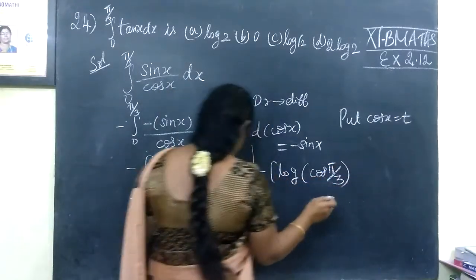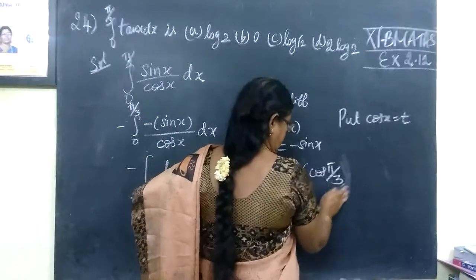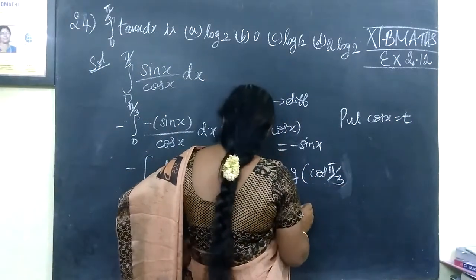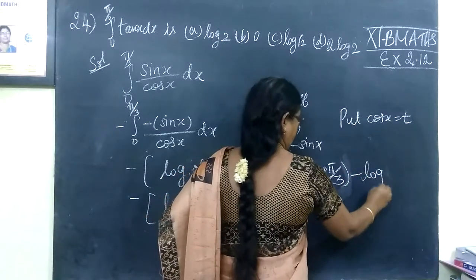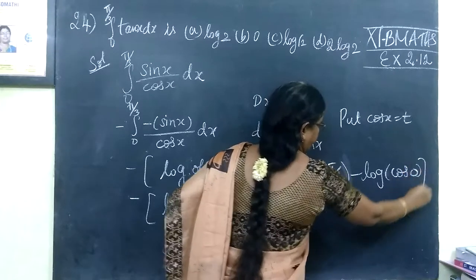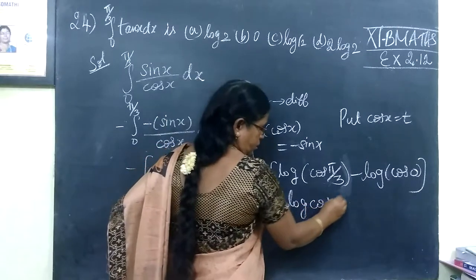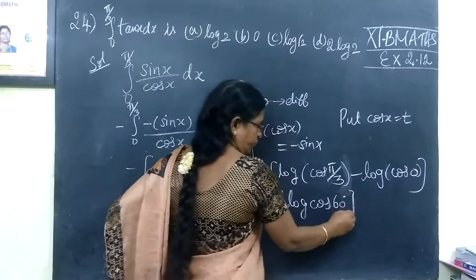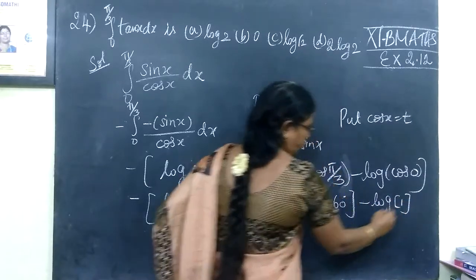Upper limit minus lower limit. So log of cos at the upper limit, that is equal to log of cos 5π/3, which is cos 60 degrees, minus log of cos 0.